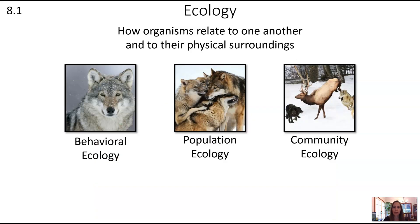We're going to look at three different areas of ecology: behavioral ecology, population ecology, and community ecology. We're looking at sort of an individual level, then a population — all organisms of the same species — and then a community, which is a group of varied species.